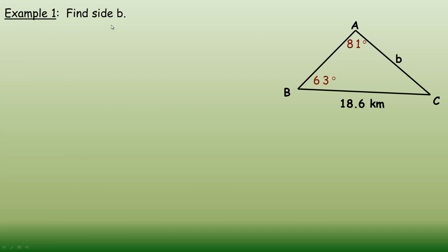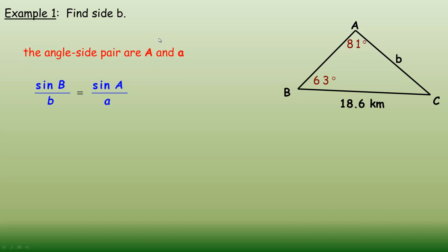Now let's look at some examples. In this first example we're asked to find side B. We have the angle-side pair of 81 degrees and 18.6 across from it — that's angle A and side A. To find side B, I write out the sine law: sine A over A equals sine B over B. Here's my angle-side pair, and to find side B I need to know angle B, which I do.